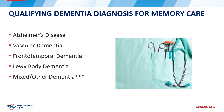An individual must have a qualified dementia diagnosis in order to receive memory care service. A qualifying dementia diagnosis would be one of the following: Alzheimer's disease, vascular dementia, frontal temporal dementia, Lewy body dementia, or mixed/other dementia.